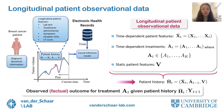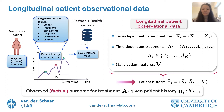Moreover, at each time step, we observe time-dependent features X and time-dependent treatments A. Here we consider that at each time step, each patient can be assigned one of k possible treatments. All of these form the patient history H. In addition, in the observational data, we also have the factual outcome Y of the patient for the treatment A_T given at time step T.